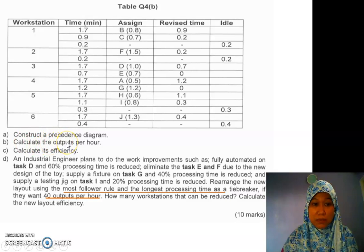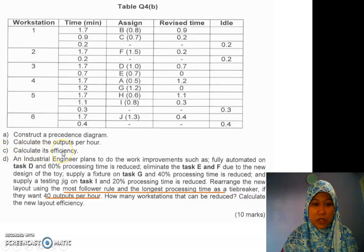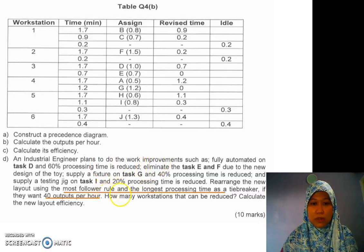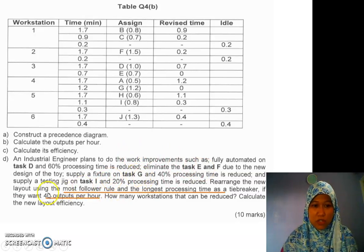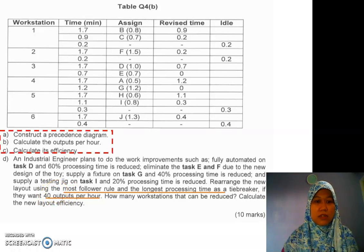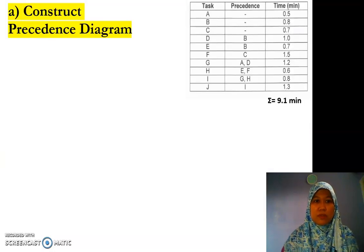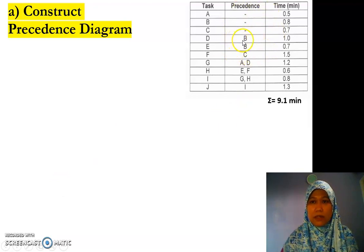The questions are: construct the precedence diagram — you need to draw the bubbles and arrows — then calculate the output per hour, calculate the efficiency of the line, and part D they do some changes on the tasks themselves. They change tasks E, F, G, I, and also change the output. First we tackle the first three questions. First is to construct the precedence diagram.